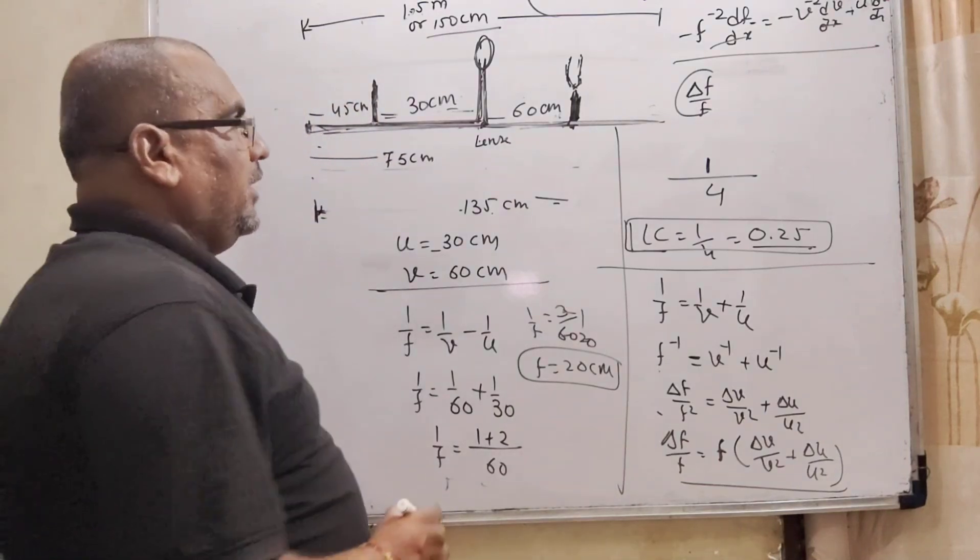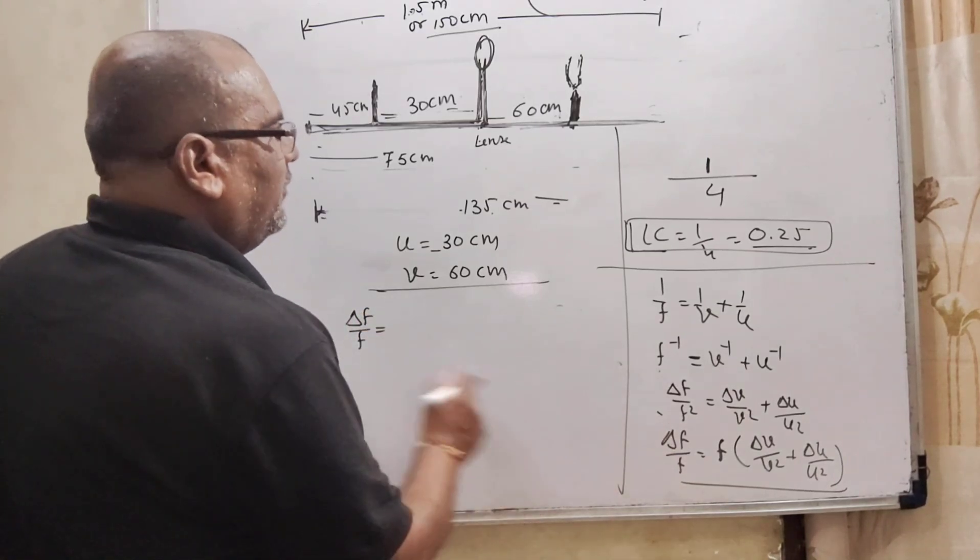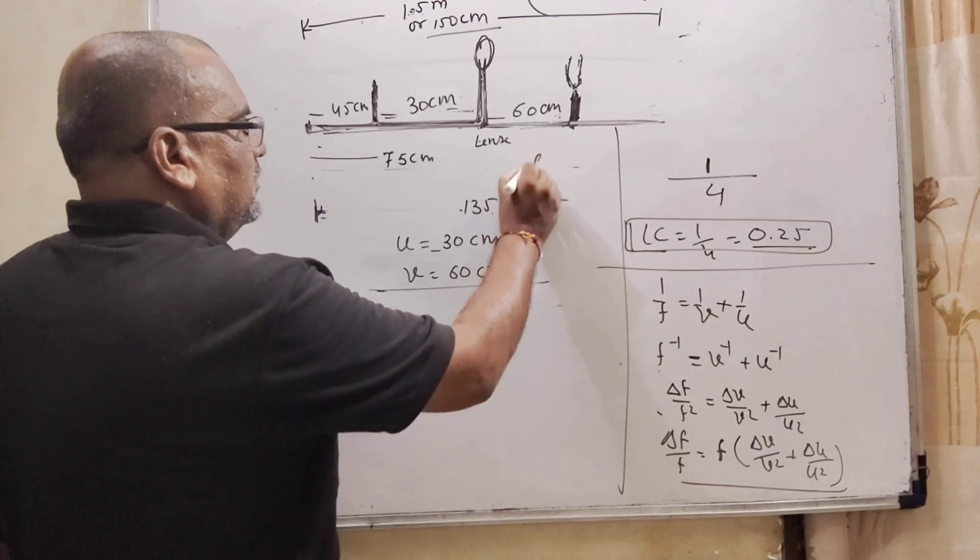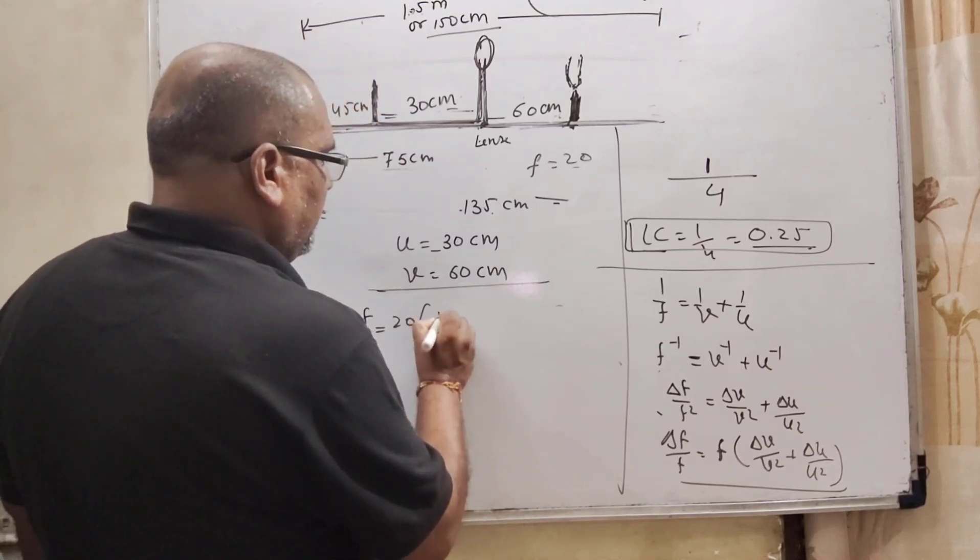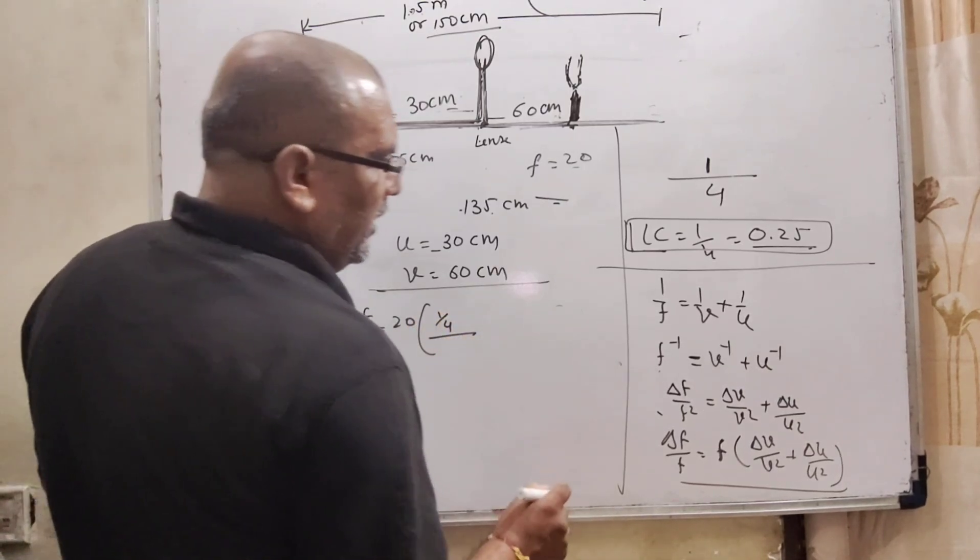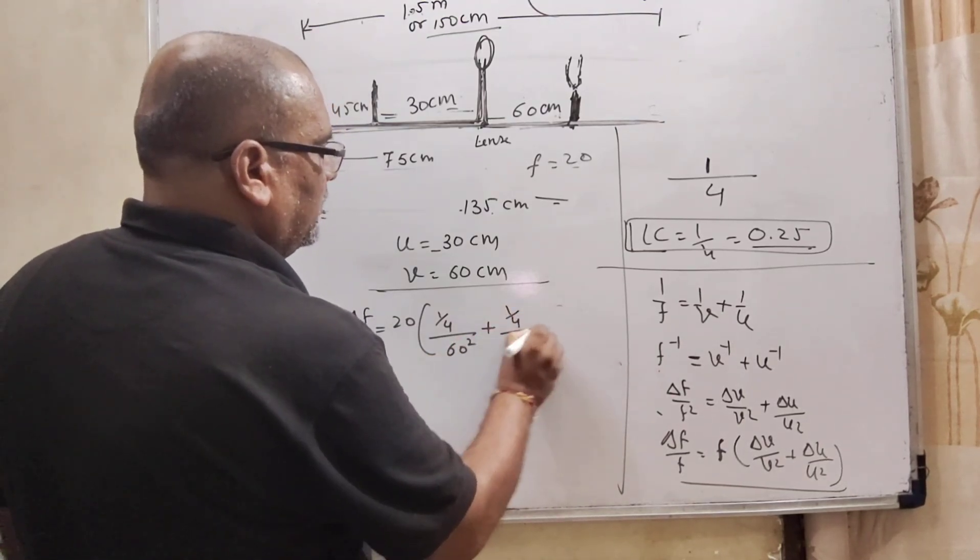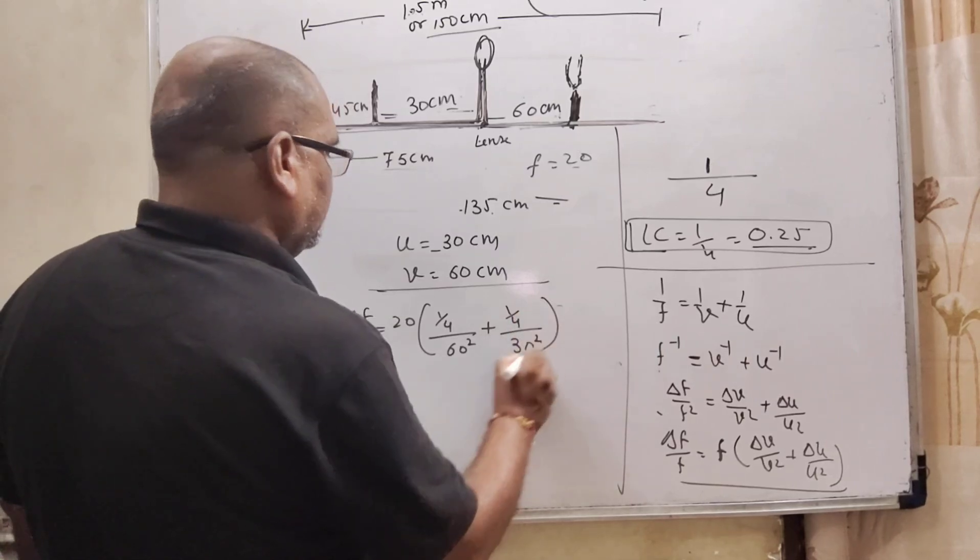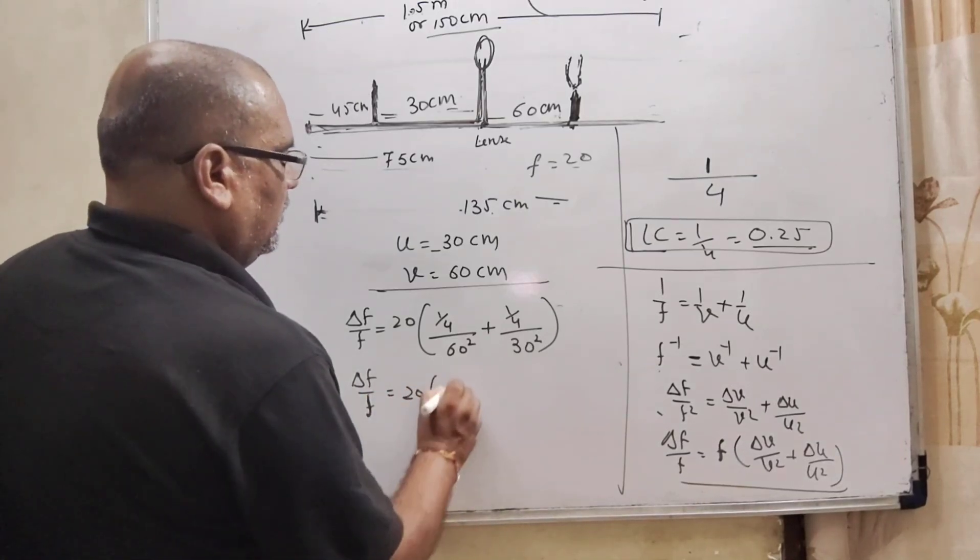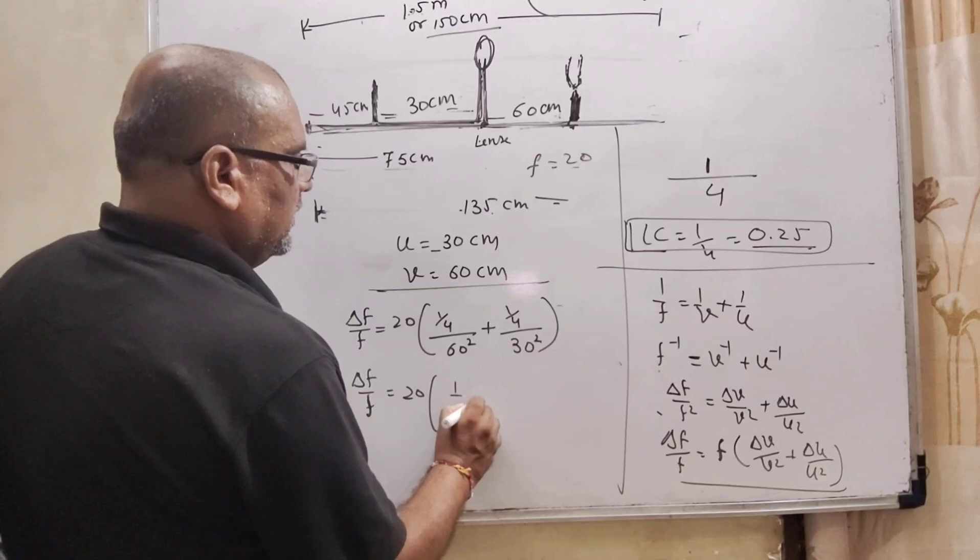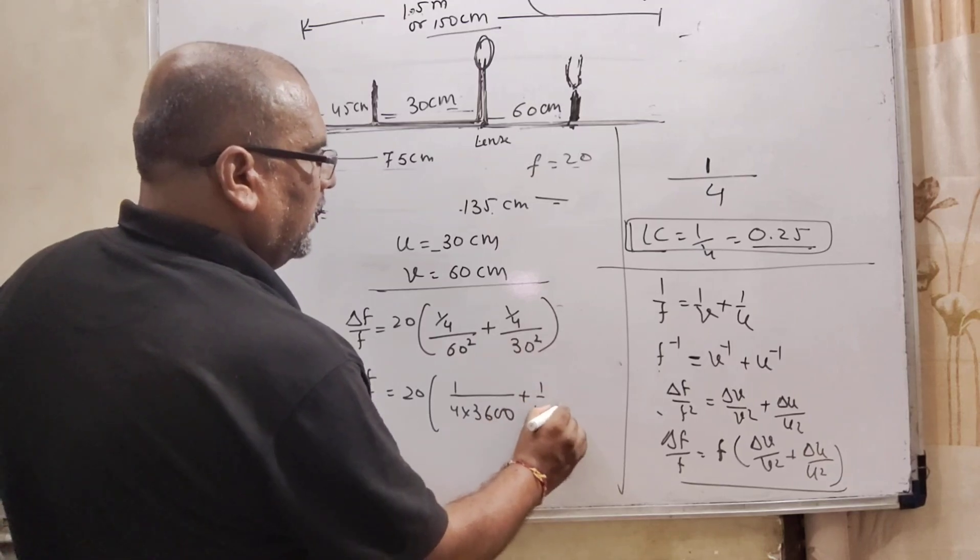And now, substitute the value according to the given. So here, delta f upon f, put as it is. Here, f, we have already found out 20. Delta v, that is error. Same for all the values, that is 1 by 4. And v square, here 60 square plus 1 by 4, that is 30 square. So, delta f upon f, 1 by 4, that is 3600, 1 by 4 and 900.